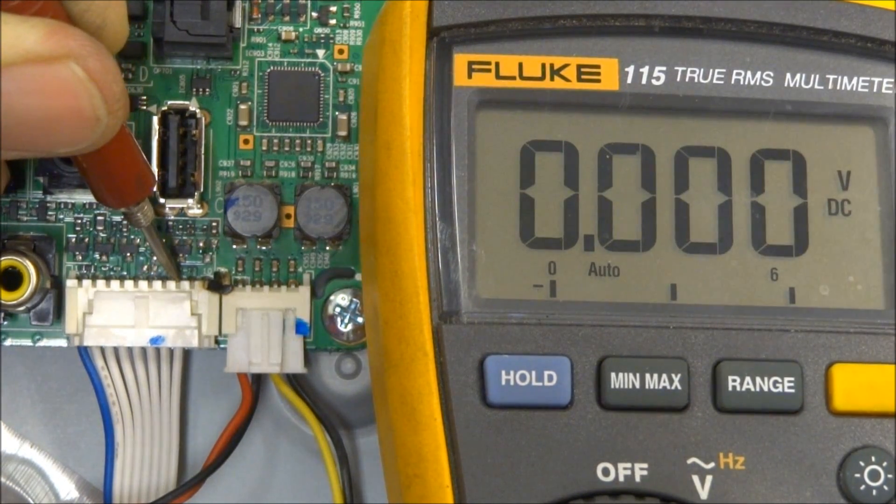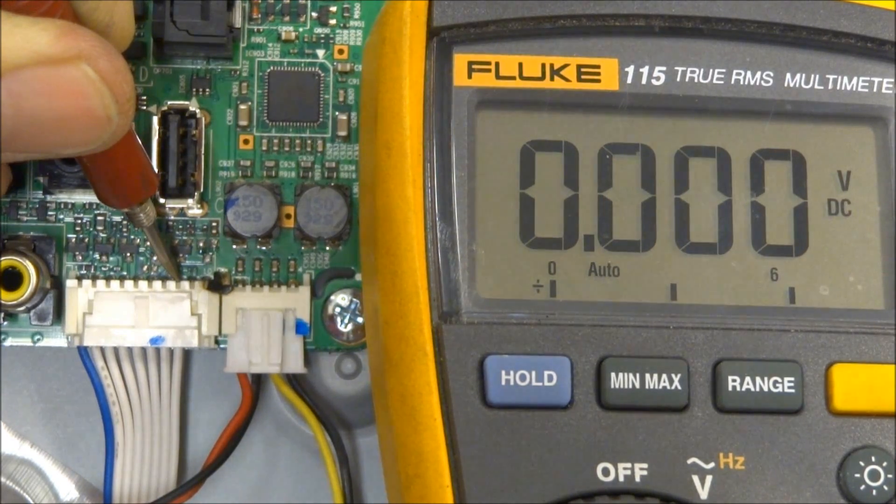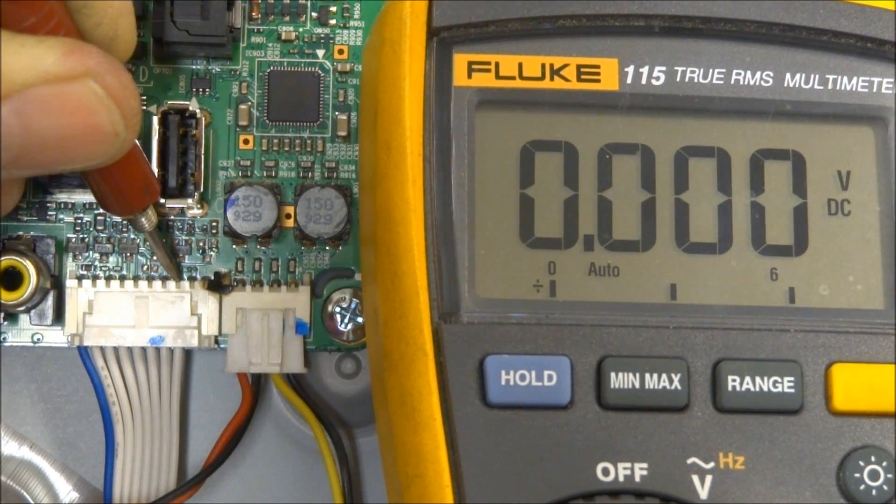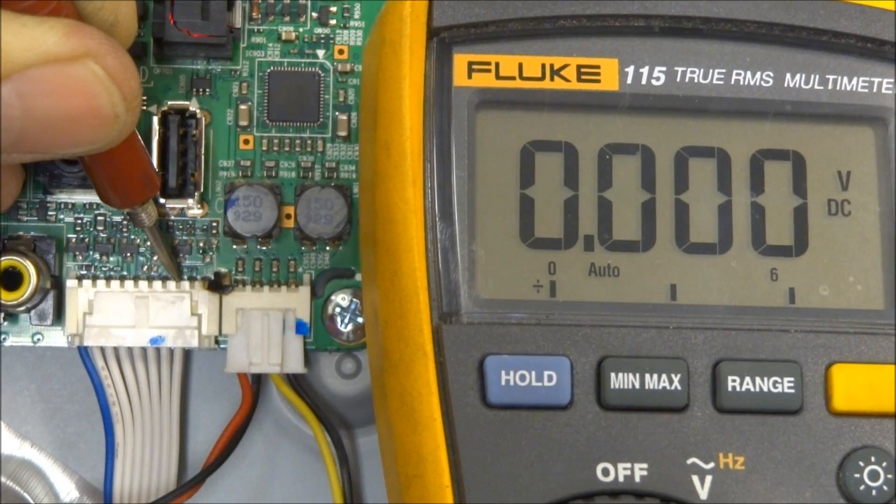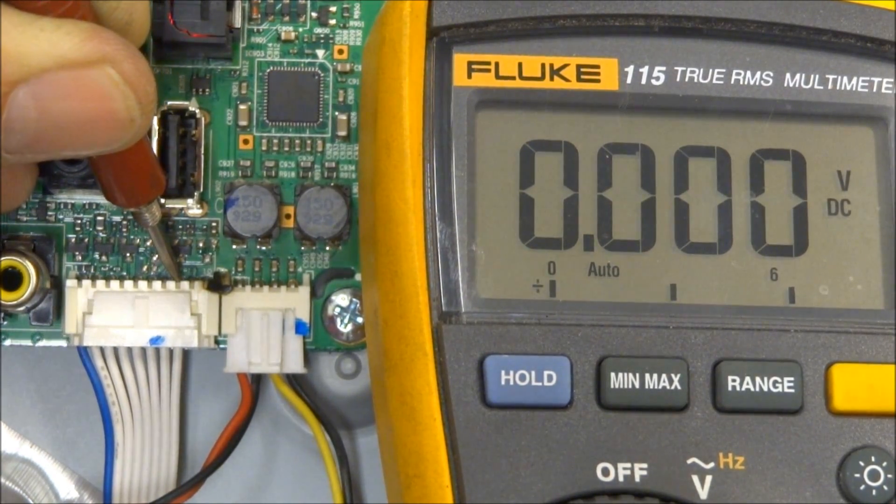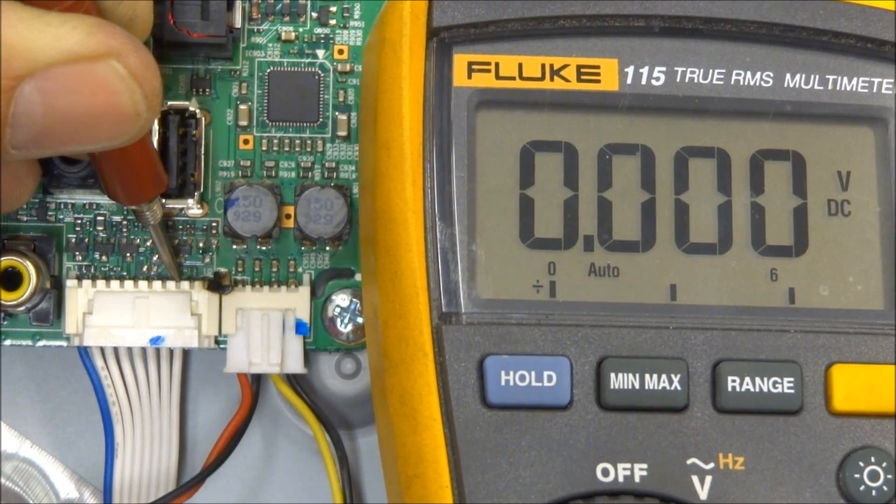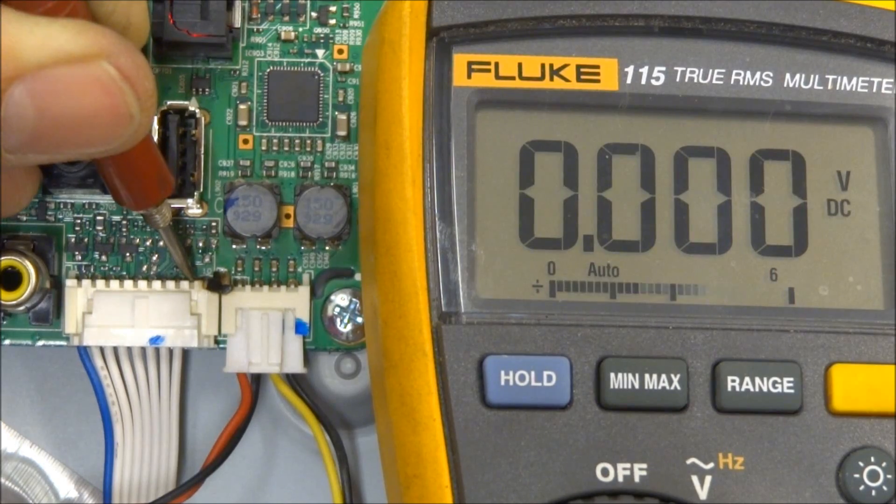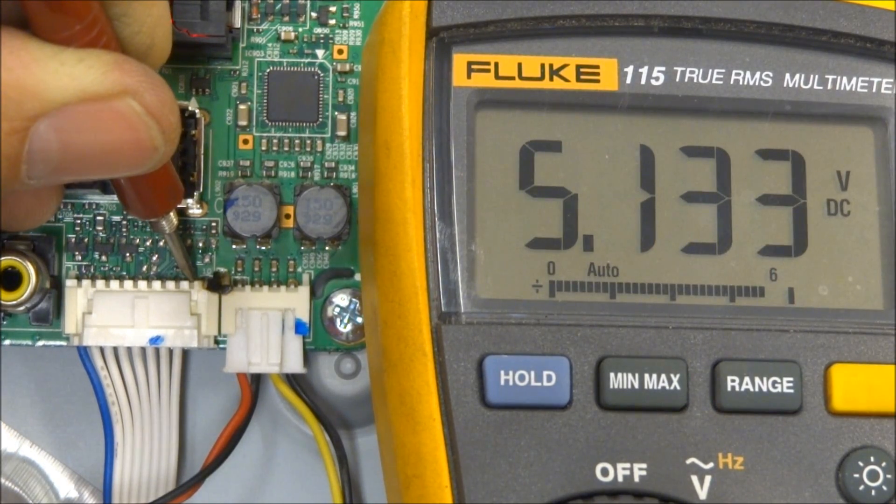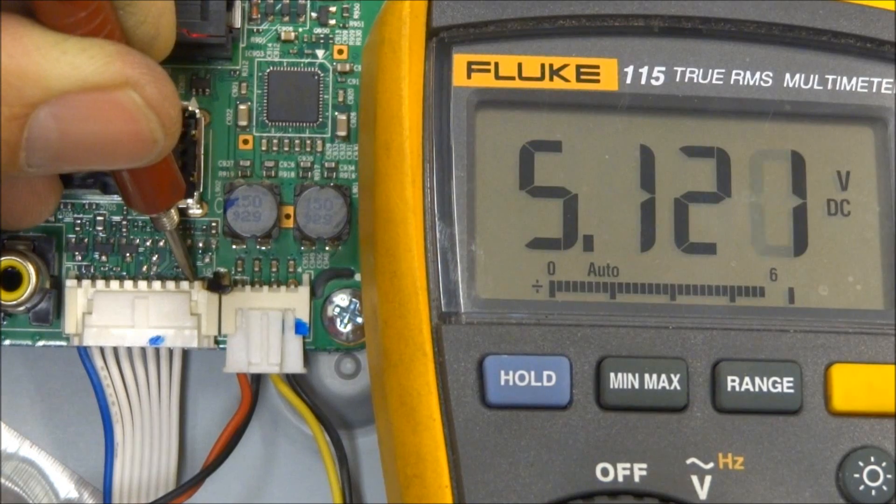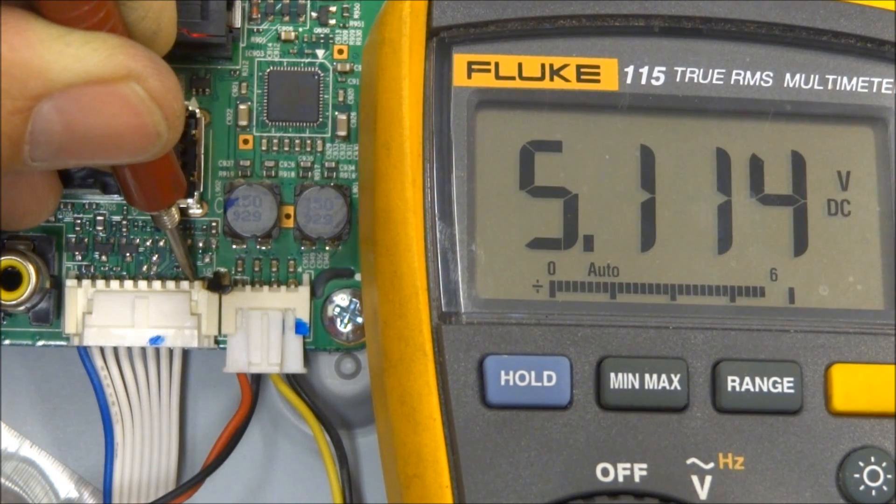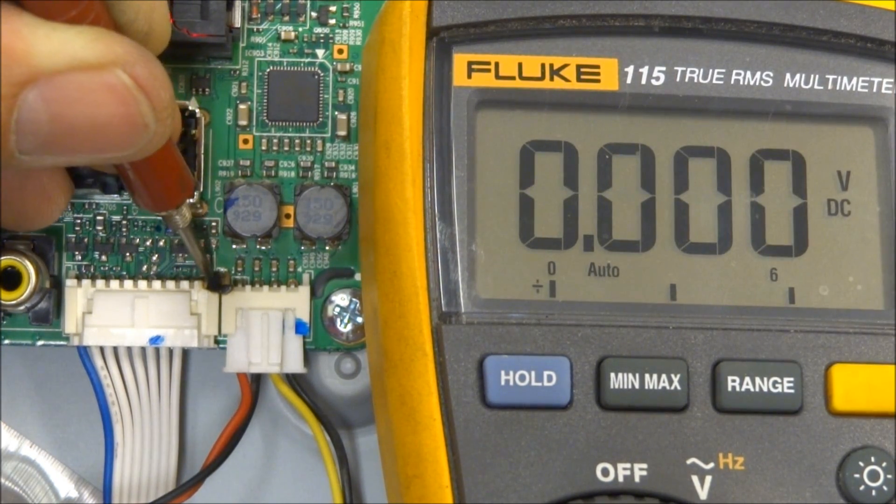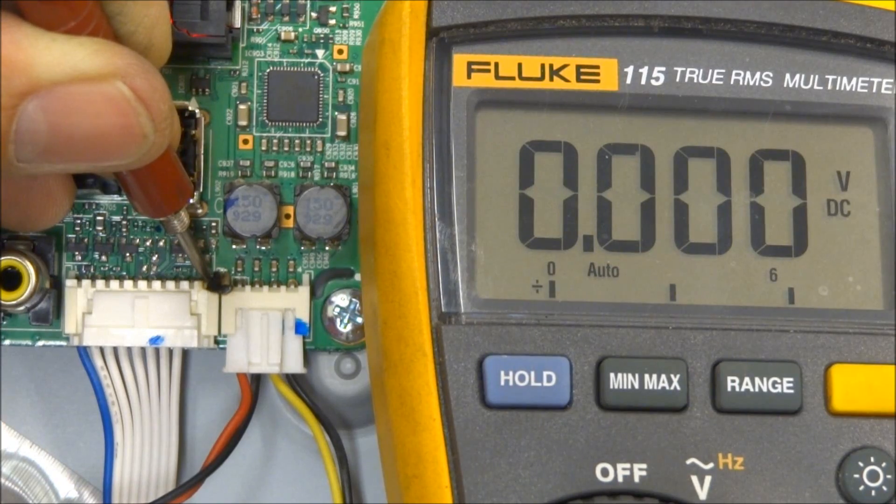And let's see. Pin number 8 is labeled always 5 volts. I don't see 5 volts on it, however. Yeah, I don't see, even though it's labeled as 5 volts, it may not be used on this particular model. I do see 5 volts on pin number 9, however. And pin number 10, I see no voltage whatsoever on this particular model.